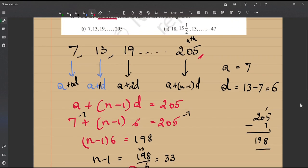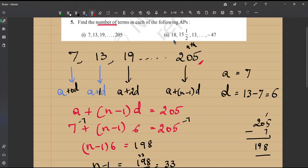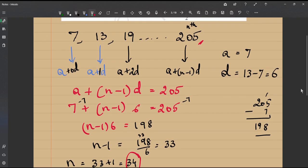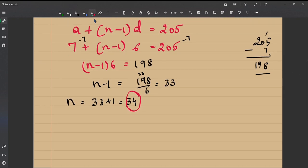Now let us see what is our second one. It is 18, 15 and a half, 13 and so on till minus 47. So let me rewrite it first. It is 18, 15 and a half, 13 and so on till minus 47.